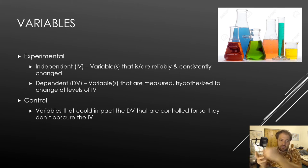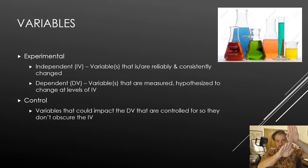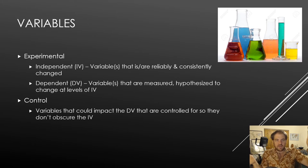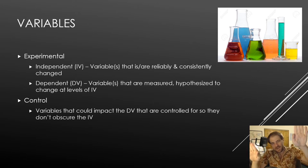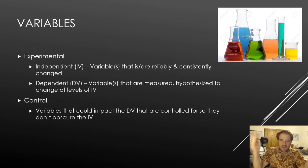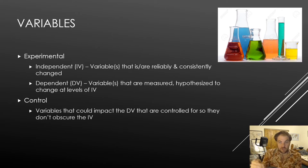A control variable keeps something constant so it doesn't obscure one of your other variables. For example, if we want to look at height and income, you might want to only look at men or only look at women, because there are height differences between men and women. A moderately tall woman might be about average height for a man, so if height causes pay differences you could get a confounded result. That's why we control for it.